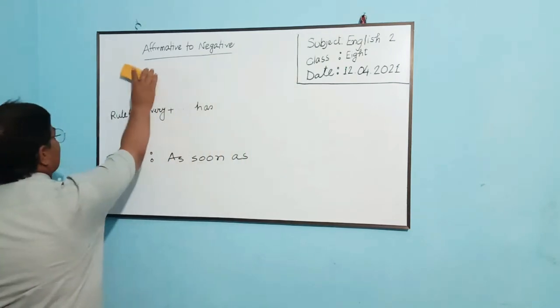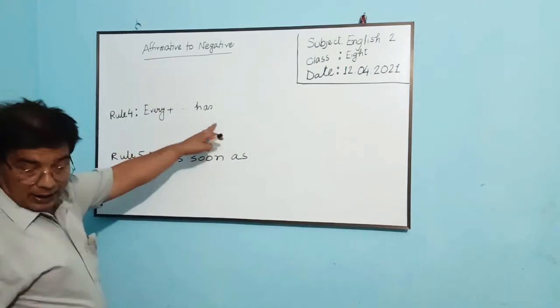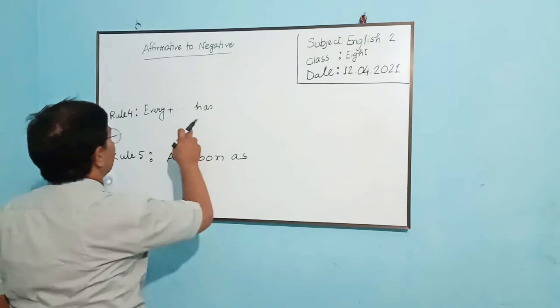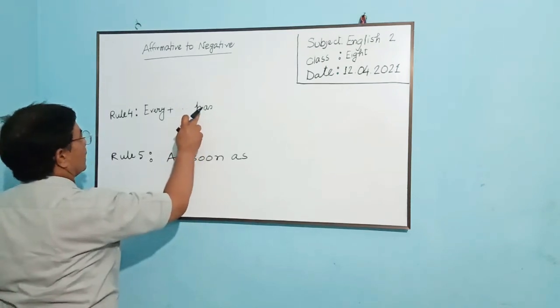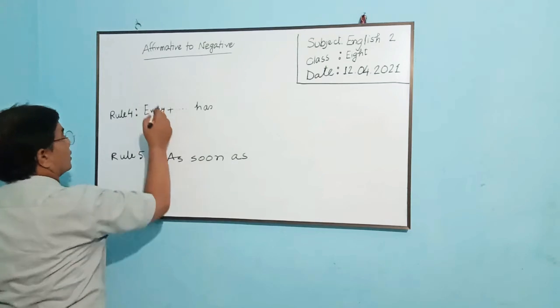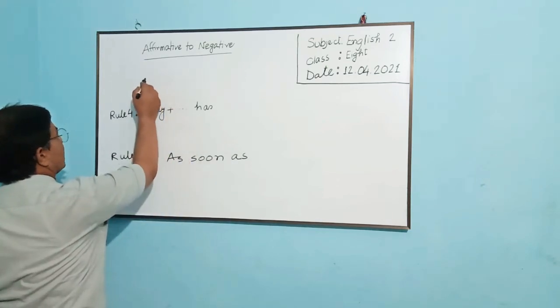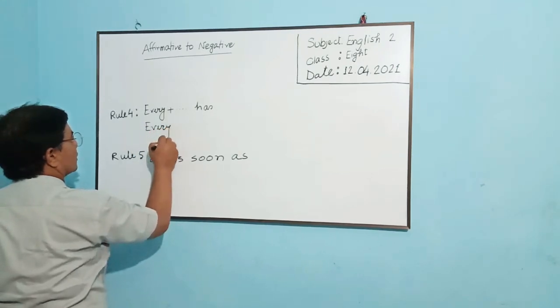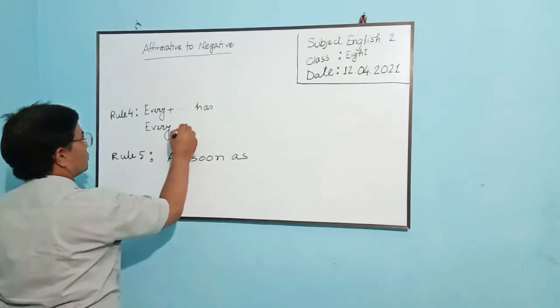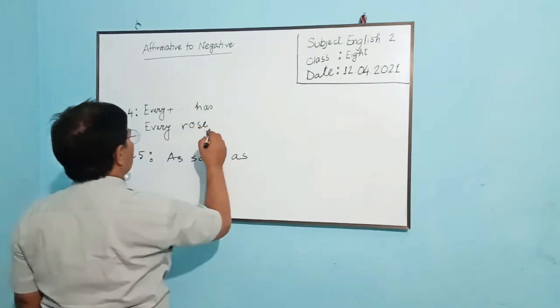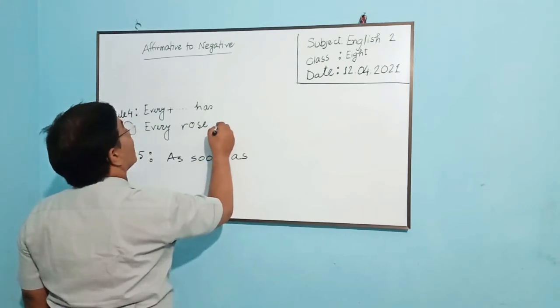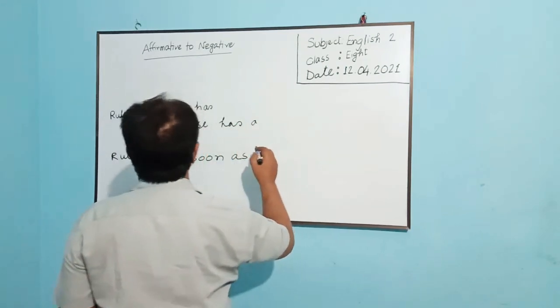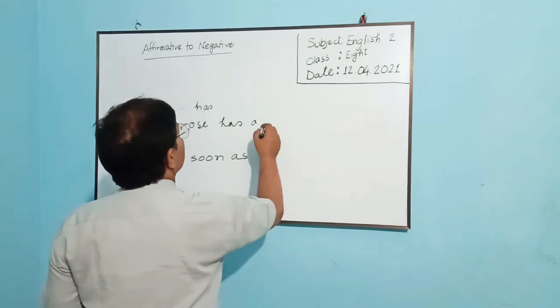The rule is every plus has. In the previous sentence there was a main verb, but here is has, that means having. So if the example like this, I should write here: every rose has a beauty.